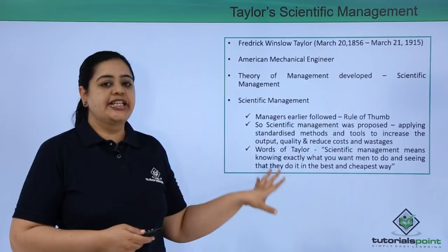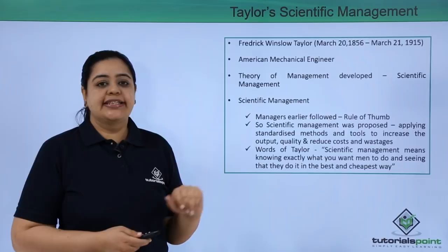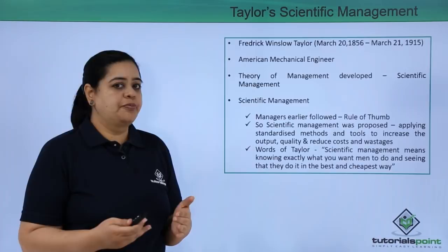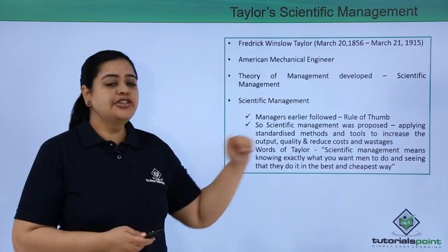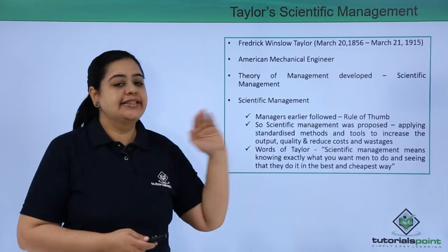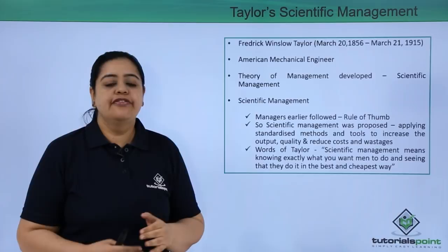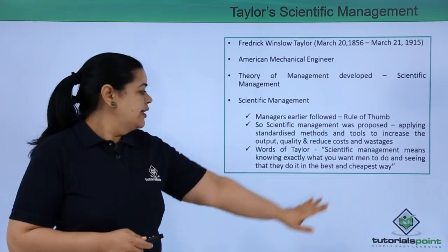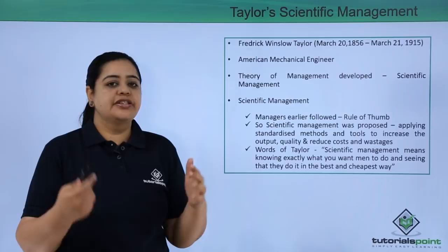Hence, because of this limitation, scientific management was proposed by Taylor. Here, what he said was: you need to apply standardized methods and tools to increase the output, quality and reduce the cost and wastages. The words of Taylor were that scientific management means knowing exactly what you want men to do and seeing that they do it in the best and the cheapest way. Very simply: first, you decide what you want from your workers and employees; then, see how they can do it in the best manner and in the cheapest way.